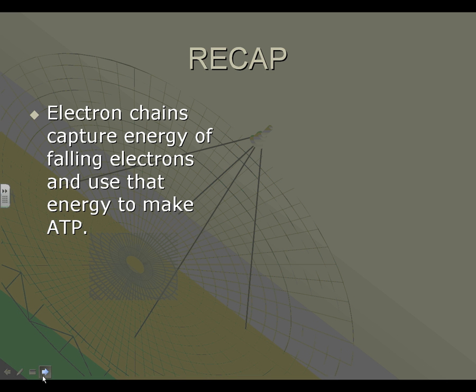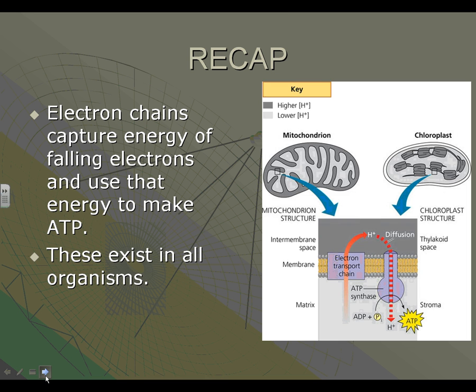So to recap, electron chains capture energy of falling electrons and use that energy to make ATP. Electron transport chains exist in all organisms. In the case of plants and animals, they exist in both places - a chloroplast in a plant, mitochondria in animals and plants.